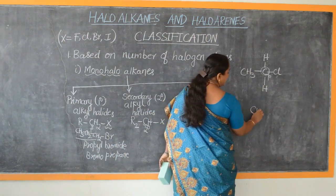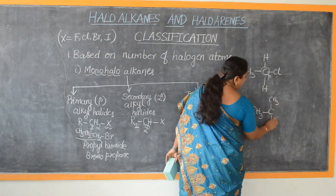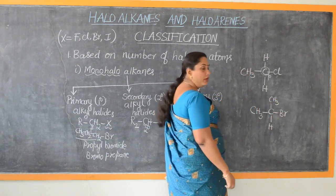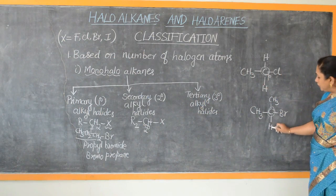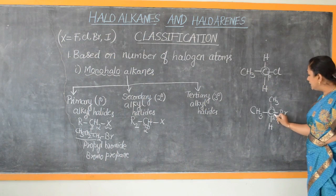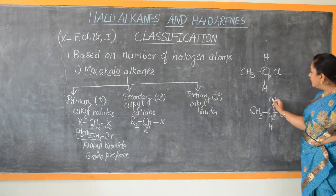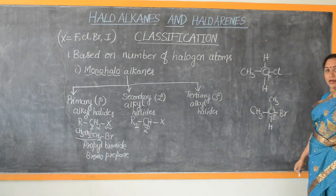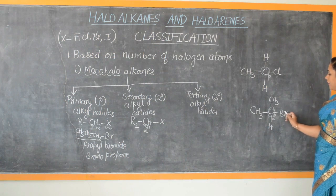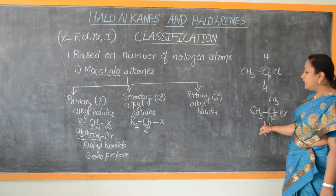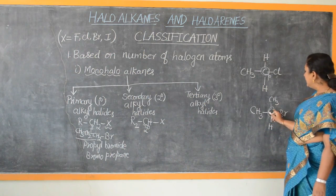For example, consider CH3-CH-CH3 with Br attached to the central carbon. The central carbon atom is attached with one hydrogen directly — so it is a secondary carbon atom. Also, it is attached with two other carbon atoms. To such a secondary carbon atom, if a halogen is attached, it gets the name secondary haloalkane or secondary alkyl halide.